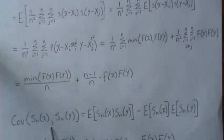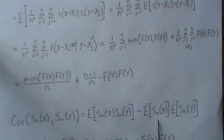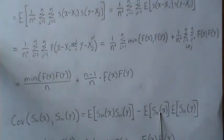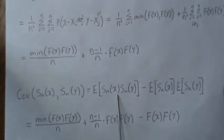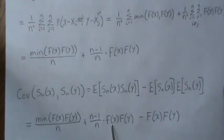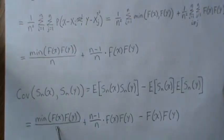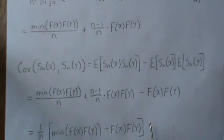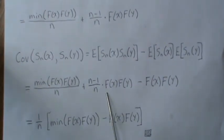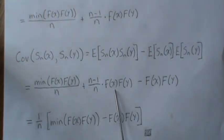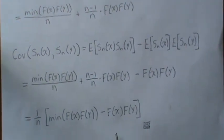Now we have enough pieces to compute the covariance. By definition, the covariance is the expected value of the product minus the product of the expected values. We just computed E[F̂(x)·F̂(y)], and each marginal expected value is F(x) and F(y) respectively. When you combine these pieces, the F(x)·F(y) terms partially cancel, leaving (1/n) times the minimum of F(x) and F(y) minus F(x)·F(y), which is exactly what we needed to show.